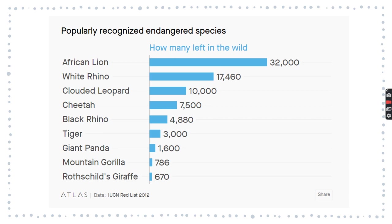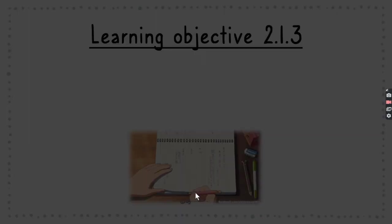These species are on the IUCN Red List of 2012 — which was about 10 years ago. The African lion had about 32,000 left in the wild, and the giant panda had 1,600 left in the wild as of 2012. We're not sure about the current numbers. If you're curious about these species and whether or not they are still endangered, I'd recommend you have a Google and research on this.